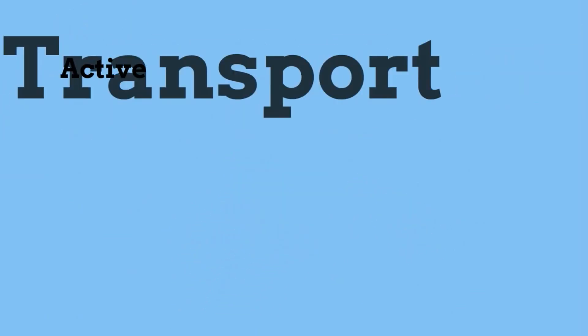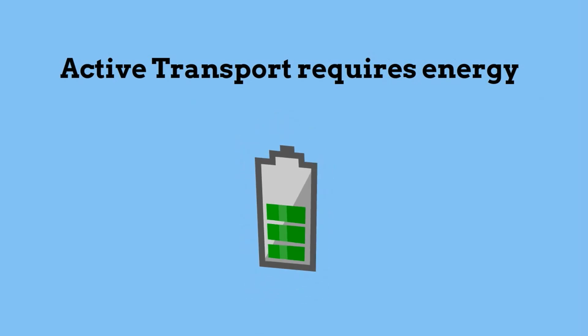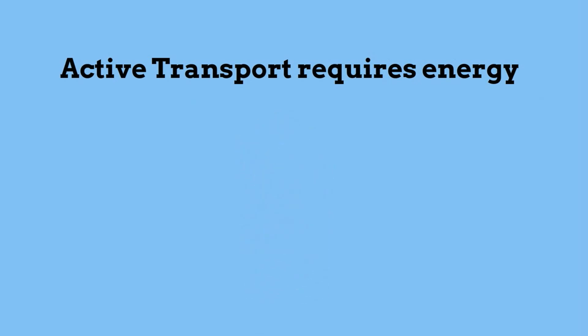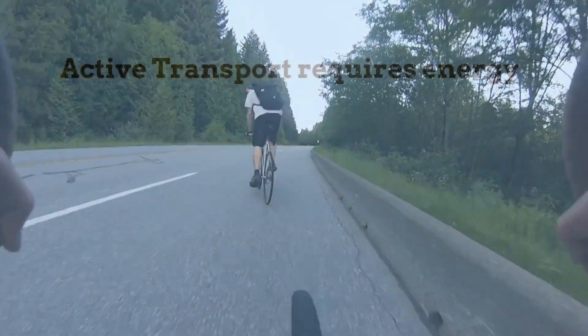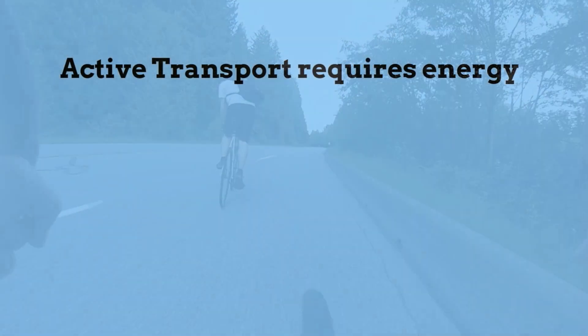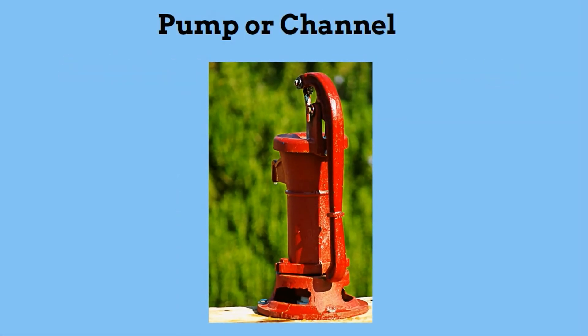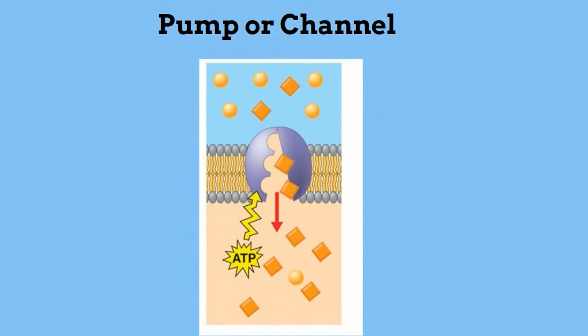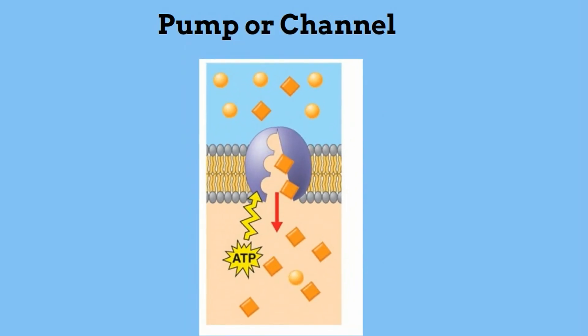Active transport requires energy — it's like riding a bike up a hill. We will look at three types. First, the cell uses a pump or channel to move objects from a low concentration to a high concentration. This is like swimming upstream and requires energy.